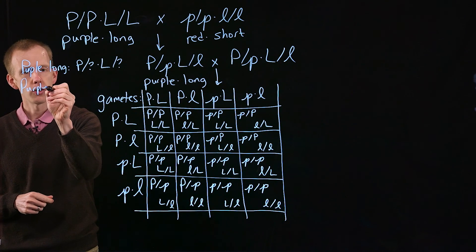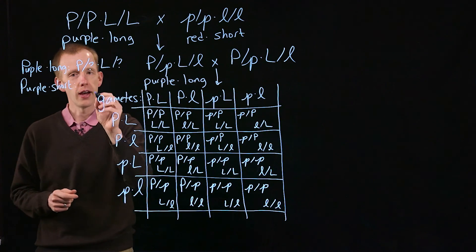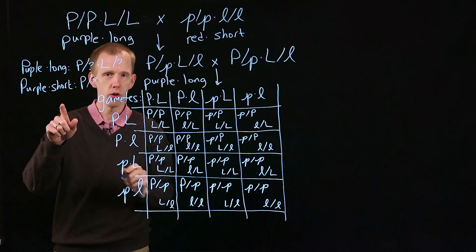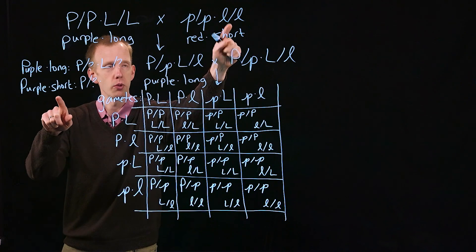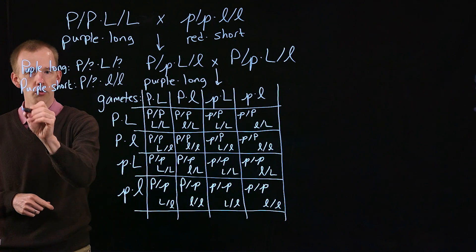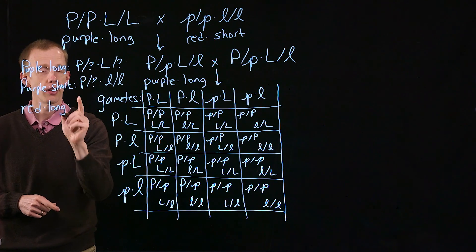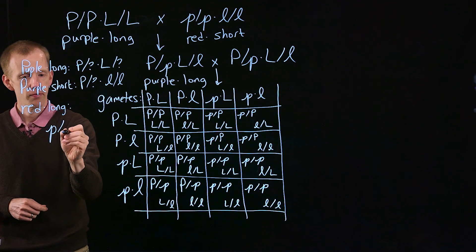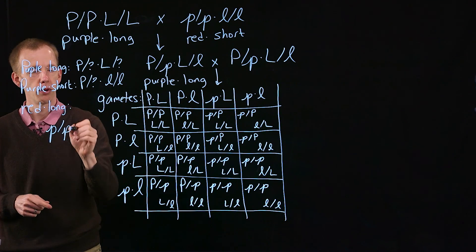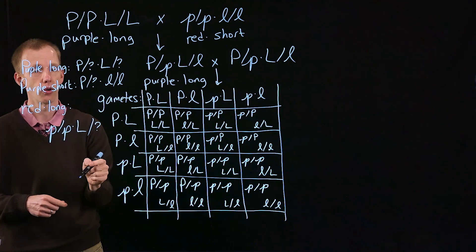Likewise, there are particular genotypes that will make purple flowers with short pollen. That's big P over anything, but if you're going to have short pollen, we know that only happens when you're little l over little l. Similarly, if we want red flowers with long pollen, that will be little p over little p—that's the only genotype that makes red flowers—but long pollen could be one dominant allele over anything, either capital L or lowercase l.